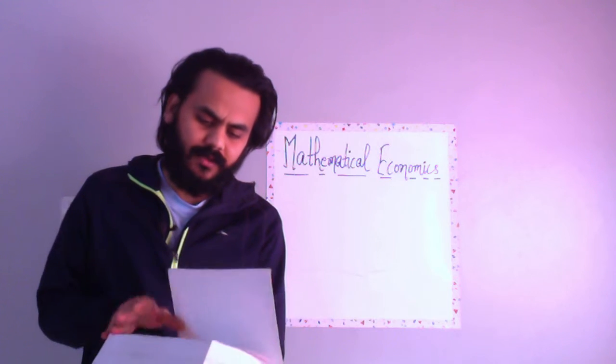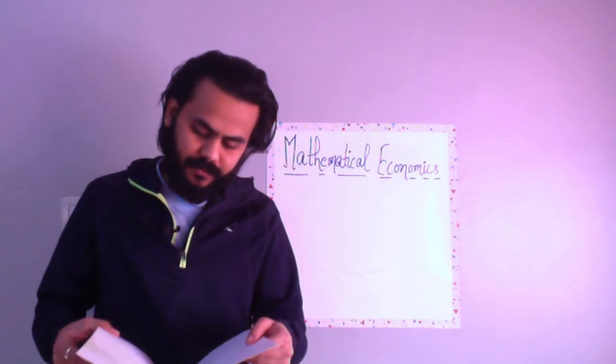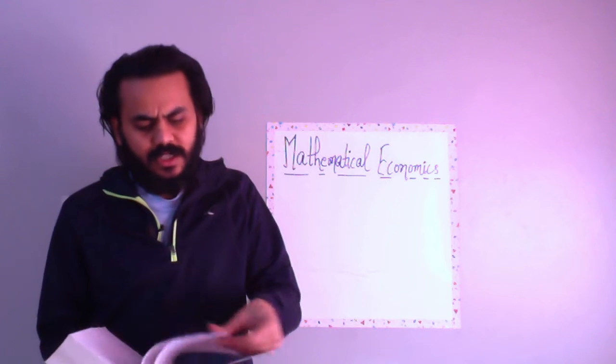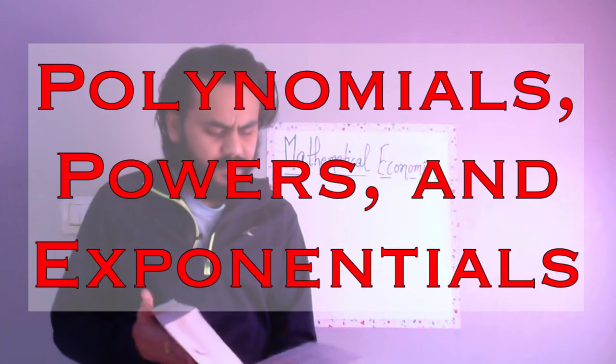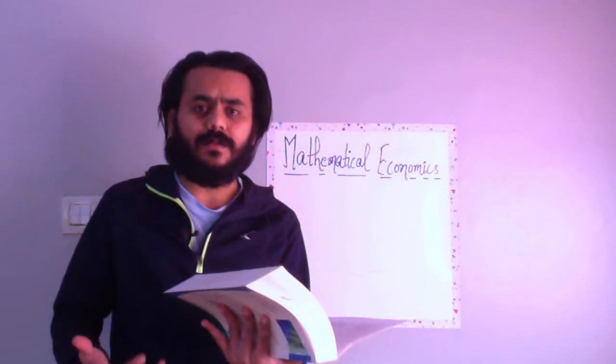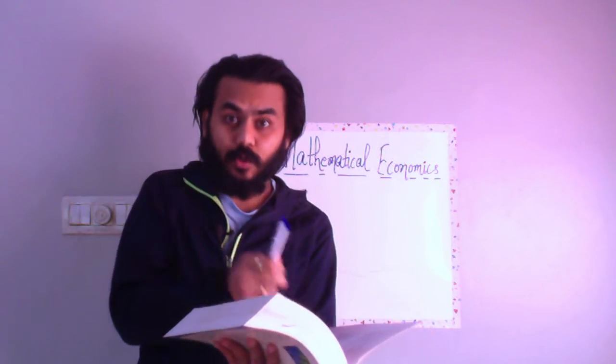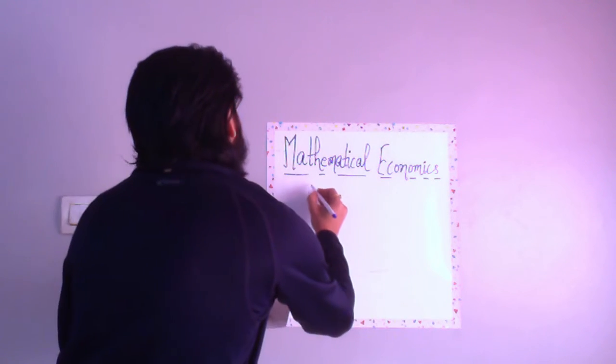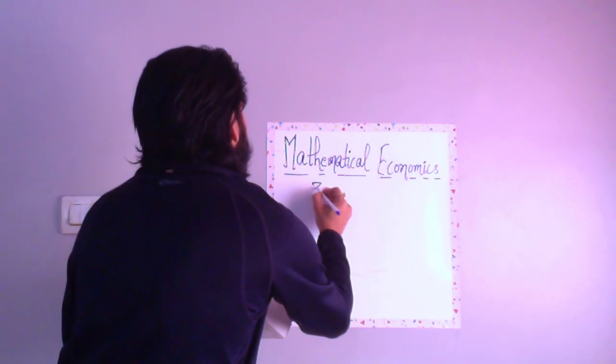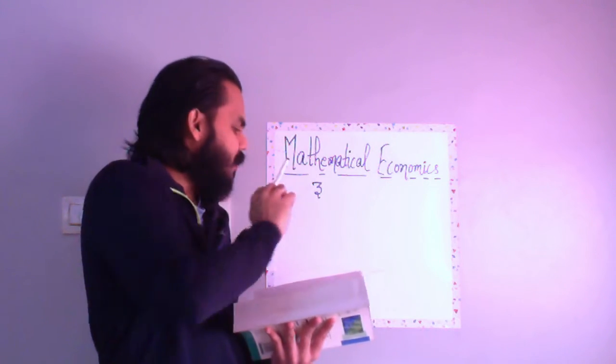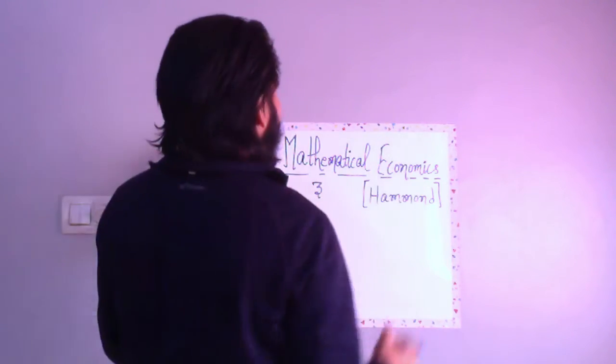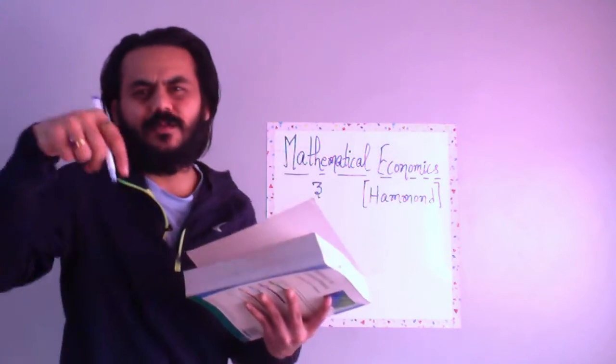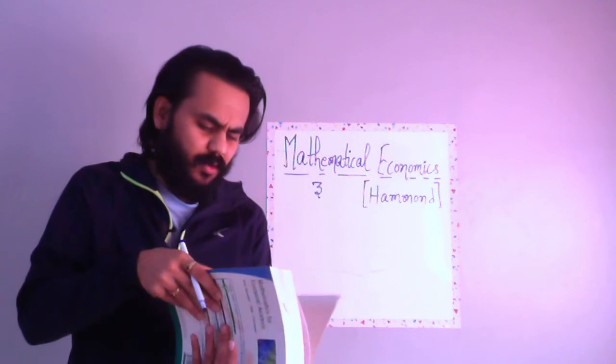Starting with chapter number three. In chapter three you have polynomials, powers and exponentials. Things are not that new if you have covered your J syllabus, but you still need to read this chapter from Hammond. You can get the link for this book in the description box of this video.